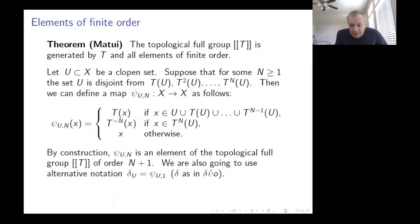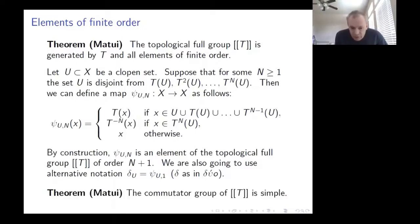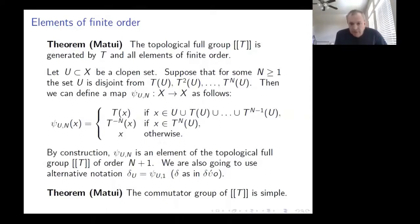One might try to take a quotient by some subgroup to remove the common part and leave only the essentials. Unfortunately, this will not work because, as shown by Matui, the commutator subgroup is simple. So when you quotient, you quotient away all commutators and are left with just some abelian group, losing all information about the dynamics. We have to deal with complications coming from the many finite subgroups inside.